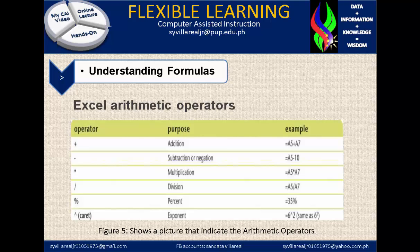We have asterisk as an operator; its purpose is multiplication. The example is equals A5 multiplied by A7. The fourth one is slash, used for division — for example, A5 slash A7. The fifth one is percent, indicating the percent of a number. And the last is caret, having the purpose of exponent — for example, 6 caret 2, which is the same as 6 squared.